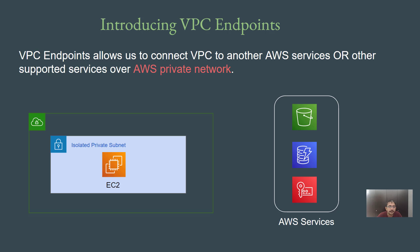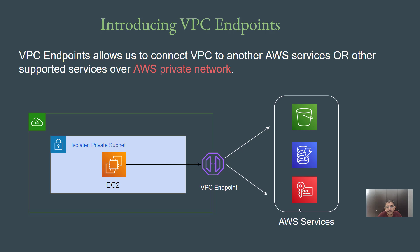To overcome these scenarios, AWS released the VPC endpoint feature. At a high level, the VPC endpoint allows resources within a VPC to connect to other AWS services or supported services over the AWS private network. From a diagrammatic perspective, traffic from an isolated private subnet is routed to the VPC endpoint, and from there it travels to AWS services through the private network — so no internet is being used at all.